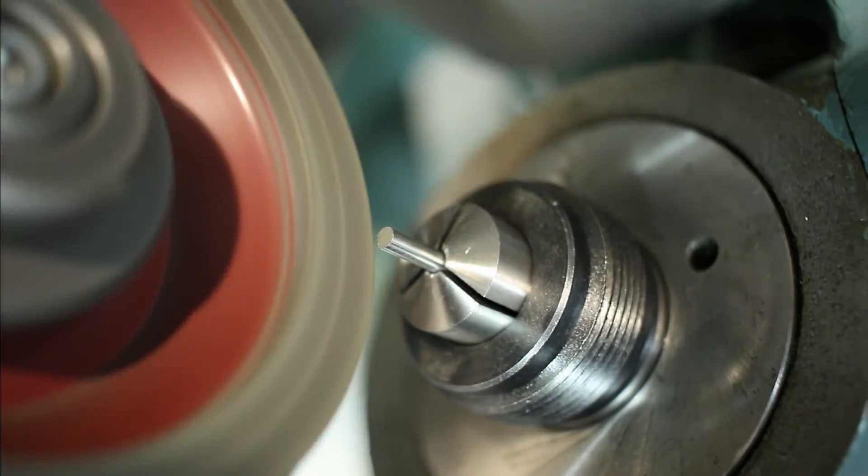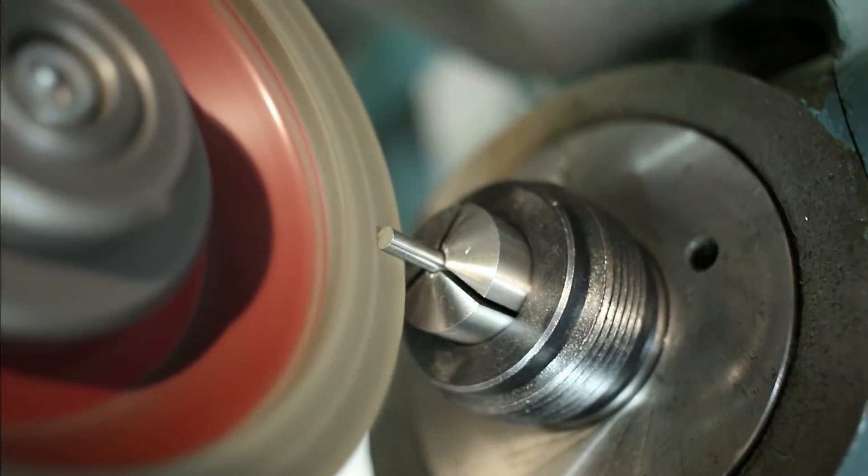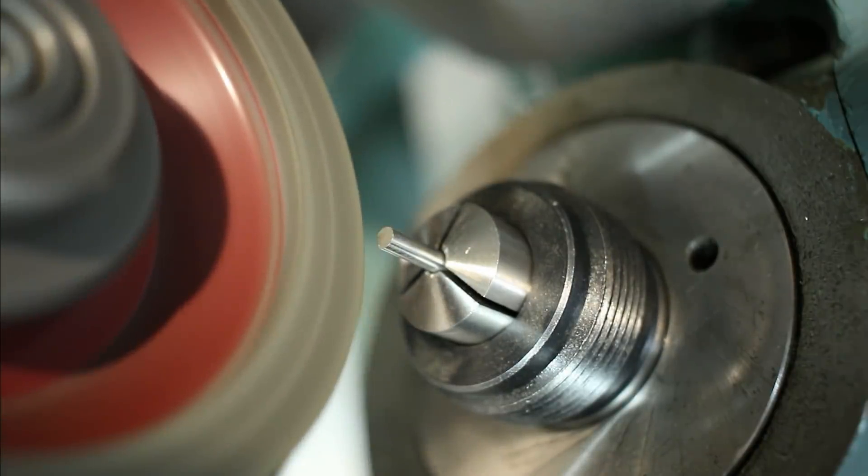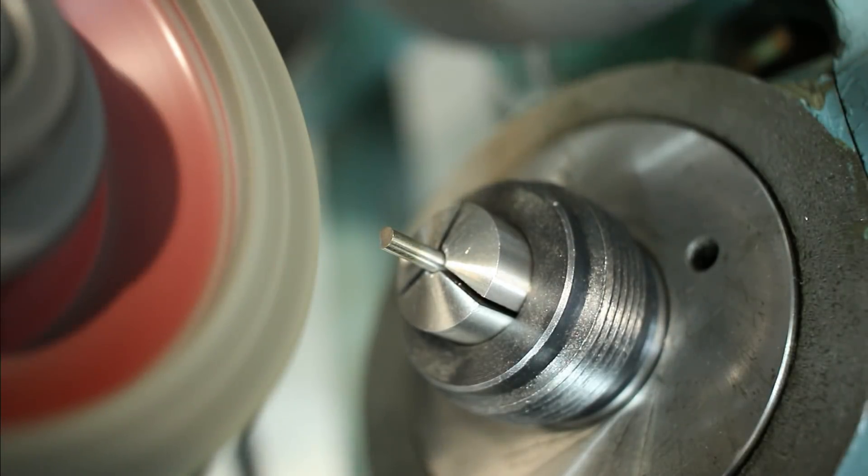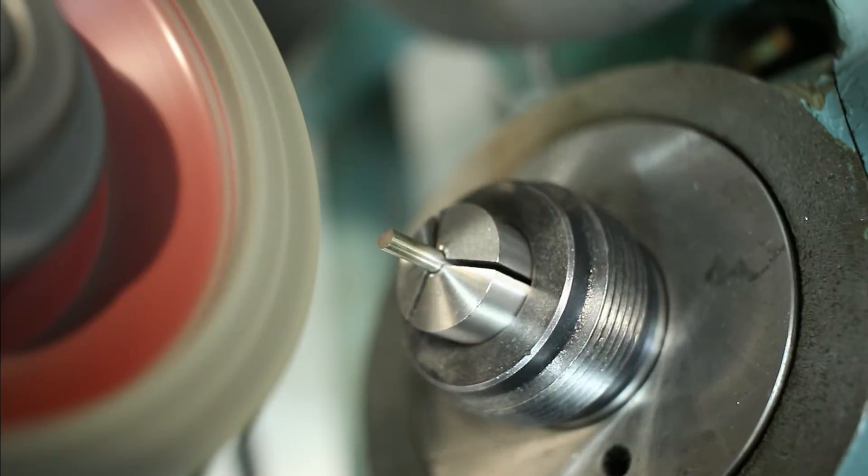I'm using an indicator to monitor the travel of the cross slide on the grinder and after I'm in far enough I index the rotary head around and do the next side of the square.